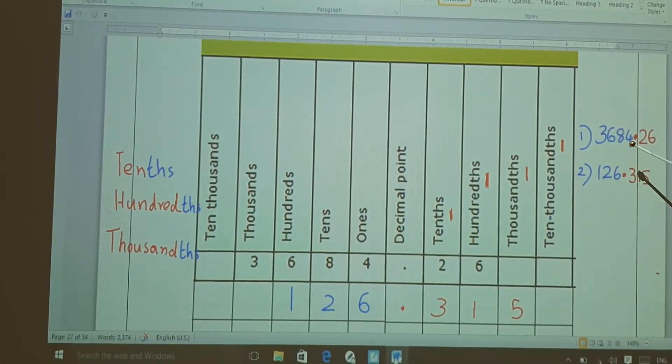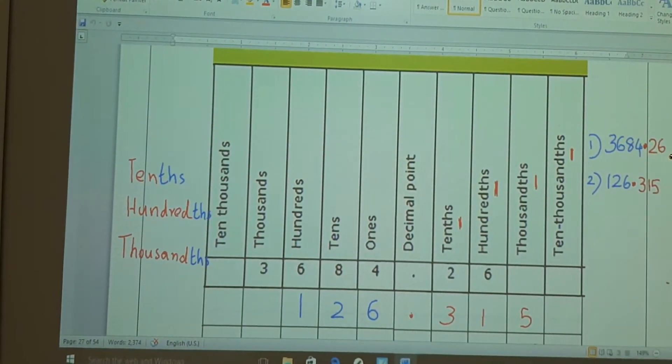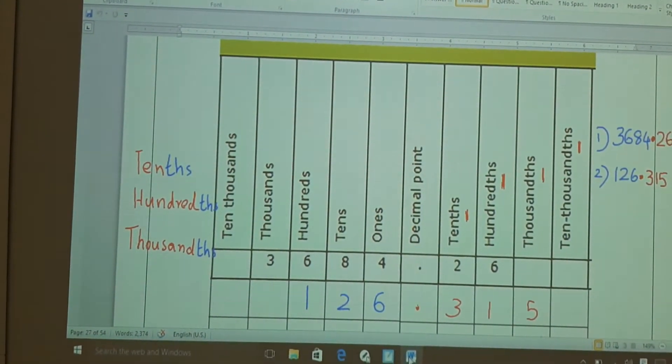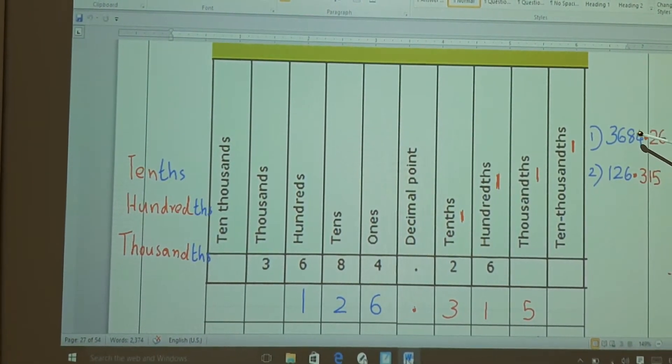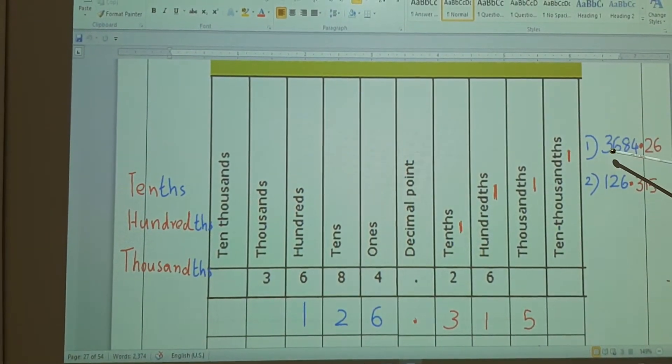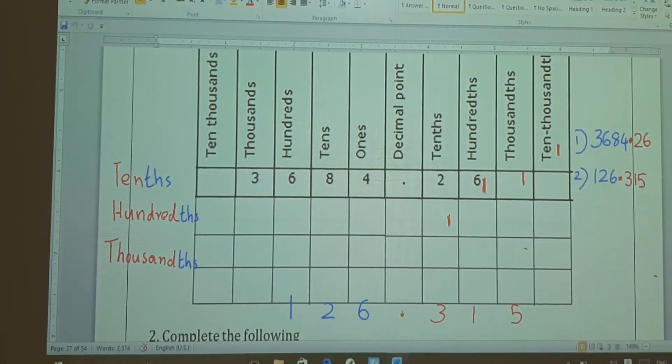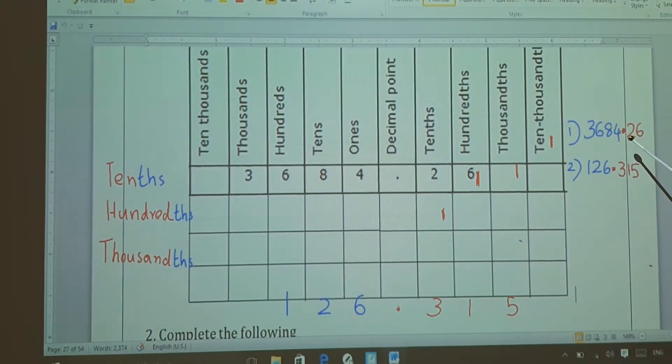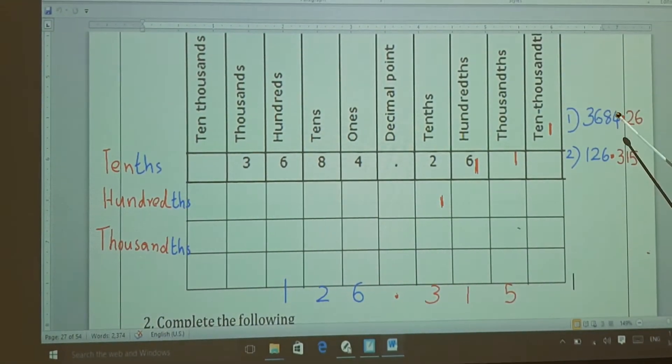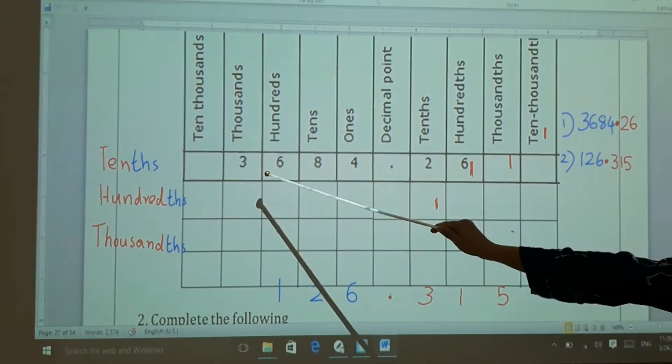See, what is the number here? 3654.26. After the decimal, the number is two and six, and the whole number is 3684. We always start the places from the right side. That is units or ones, tens, hundreds, thousands.